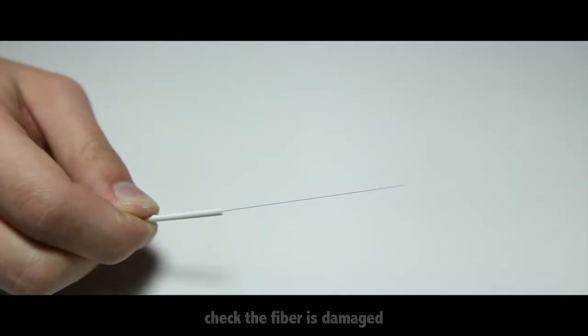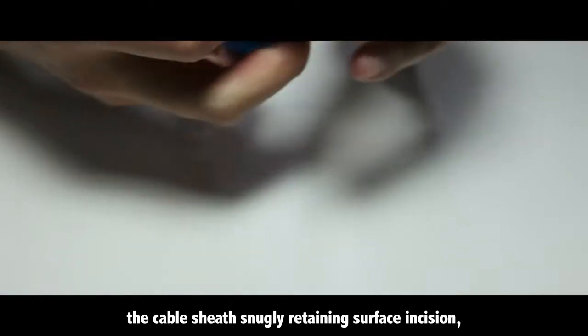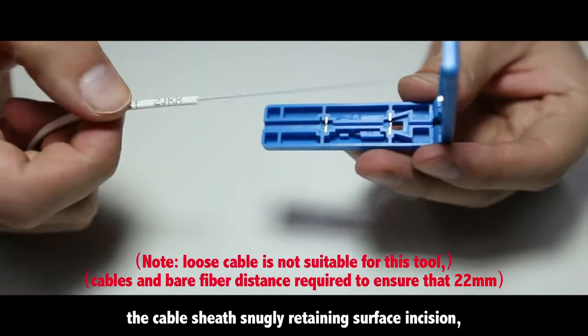Check if the fiber is damaged. The cable sheath should snugly retain the surface incision.